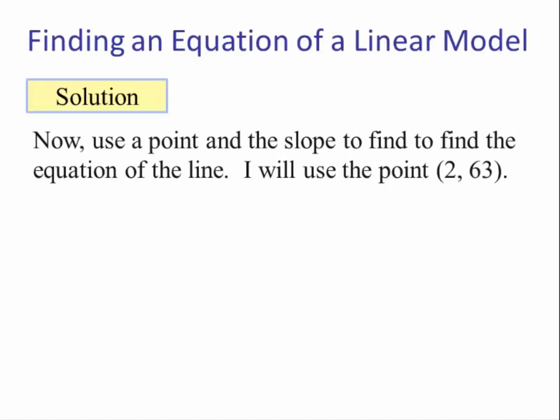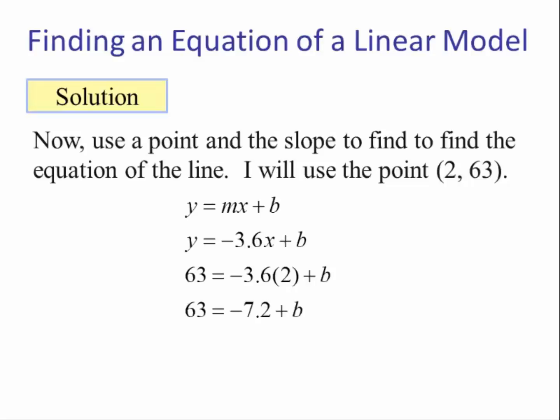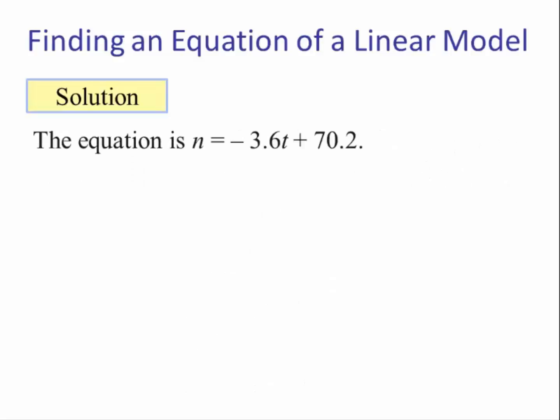Now we use a point and the slope to find the equation of the line. The point I will use is (2, 63). Recall Y = MX + B; we know the slope is negative 3.6. Using the point (2, 63): 63 = negative 3.6 times 2 plus B. We multiply, then add 7.2 to both sides to solve for B, giving B = 70.2. So the equation is Y = negative 3.6X + 70.2, or in our variables: N = negative 3.6T + 70.2.